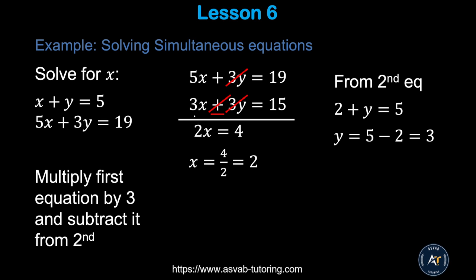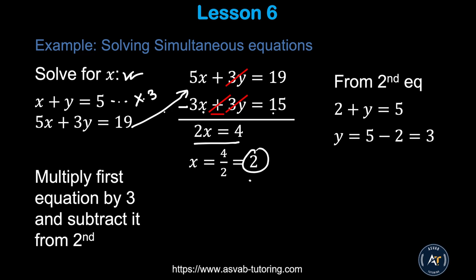Now let's learn how to solve simultaneous equations — two equations with two unknowns. For example: x + y = 5 and 5x + 3y = 19. Eliminate y by multiplying the first equation by 3: 3x + 3y = 15. Subtract from the second equation: 5x − 3x = 2x = 4, so x = 2. You can check by plugging the value back into either equation.